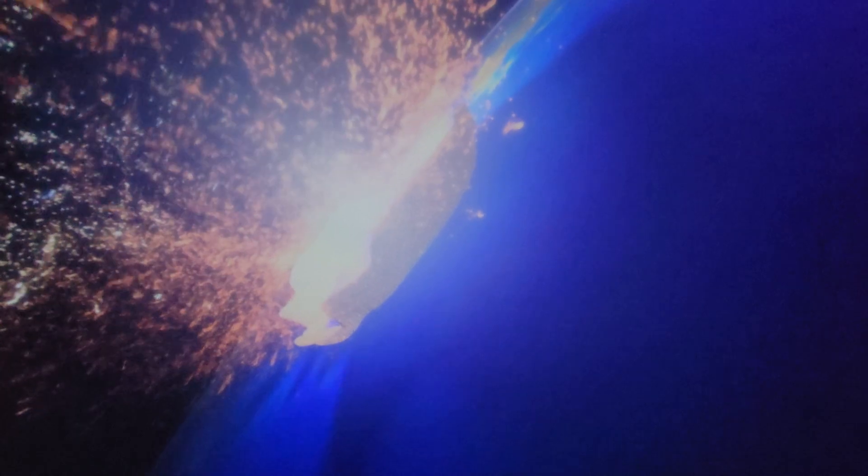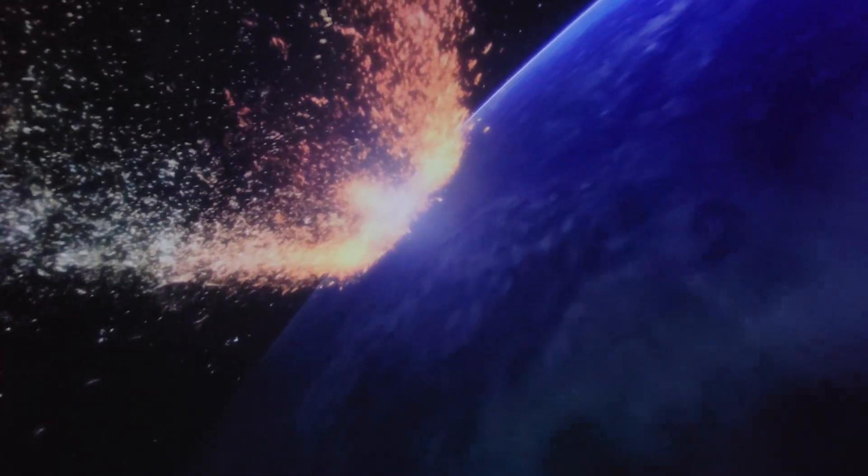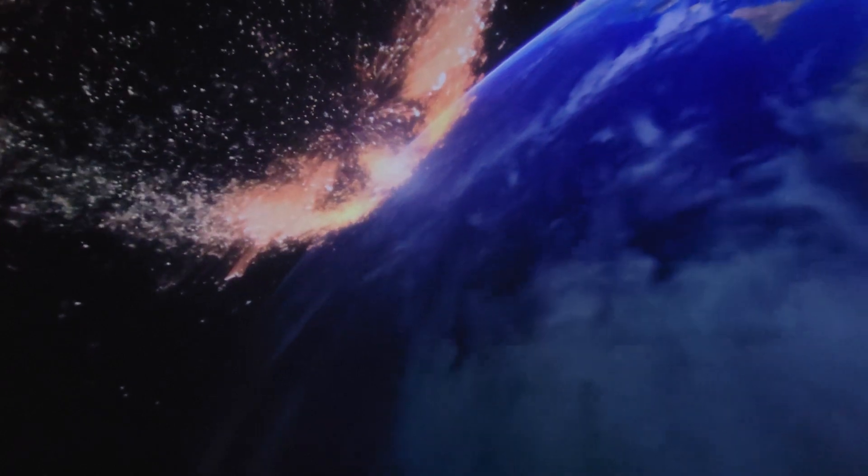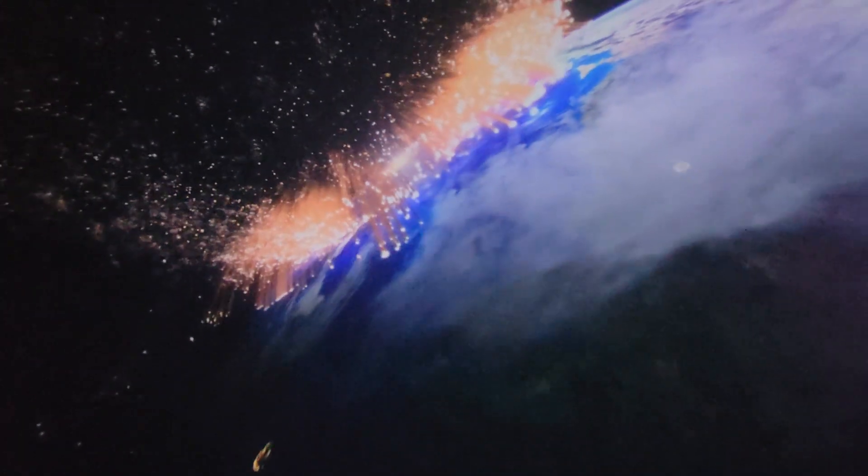The asteroid hit on what is now Mexico. The impact created a fireball that scorched everything in sight. Vaporized Earth and rock were blasted into space. As this material rained back down, it heated the atmosphere. Glowing debris slammed into Earth, hitting again and again. Everything that could, caught fire.